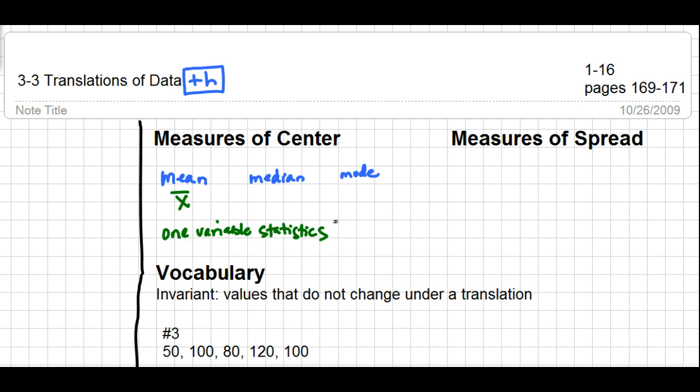The measures of spread are range, IQR standing for interquartile range, variance, and standard deviation. Range is max minus min. IQR is Q3 minus Q1 - you can't find the quartiles until you find the median first. The variance is the standard deviation squared, and the standard deviation when you go to one variable statistics on your calculator is s with an x next to it.